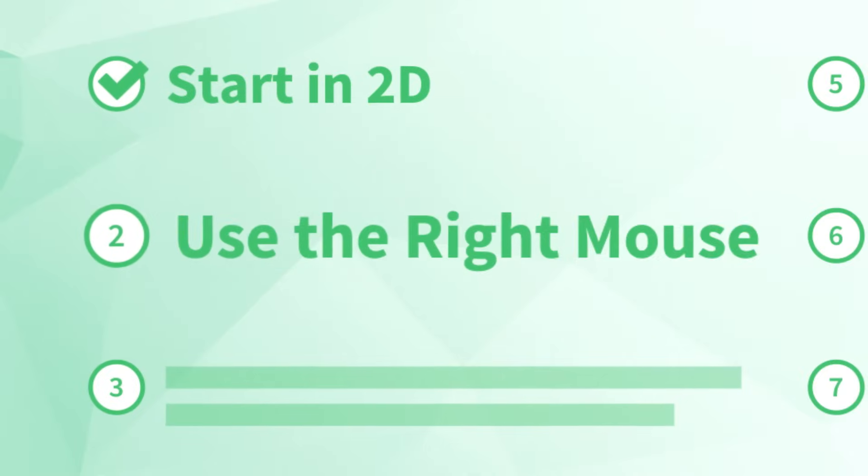Number 2: Use the right mouse. Through our courses, we've helped thousands of design professionals go from struggling to learn SketchUp on their own to working quickly and efficiently. One thing I always stress is how important it is to use the right mouse. SketchUp is designed to be used with a three-button scroll-wheel mouse — a mouse with a left button, a right button, plus a center scroll wheel that can be rolled and clicked. You might be tempted to use only your trackpad, but that would be a mistake. Do yourself a favor and get a three-button scroll-wheel mouse. It doesn't have to be a fancy one, and your future self will definitely thank you.